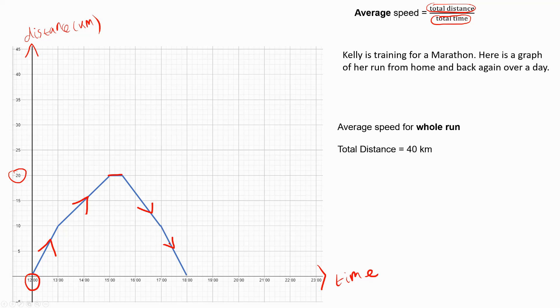Looking at the time, I can see that this is over a period of 6 hours from 12 to 1800. To work out the average speed, I need to do total distance divided by total time, giving me an average speed of 10 kilometres per hour.